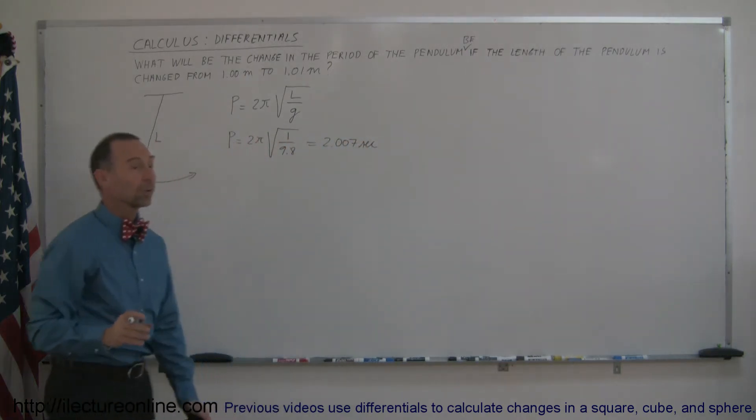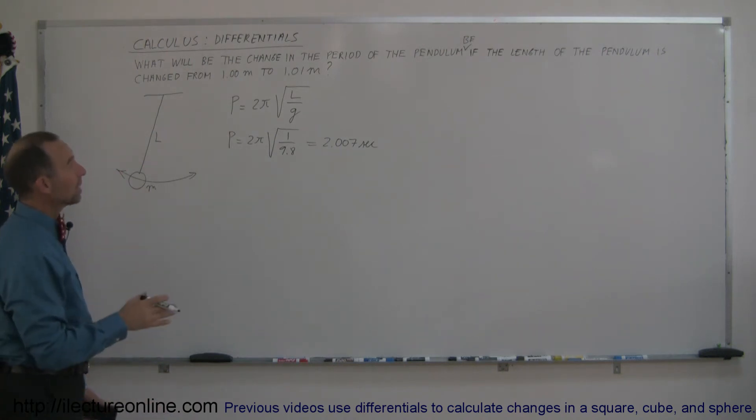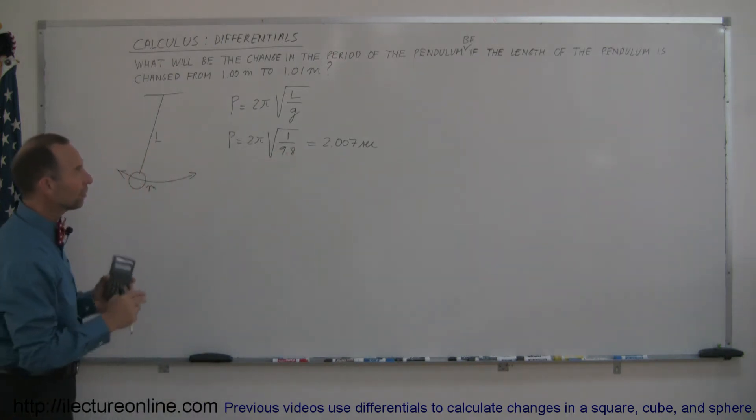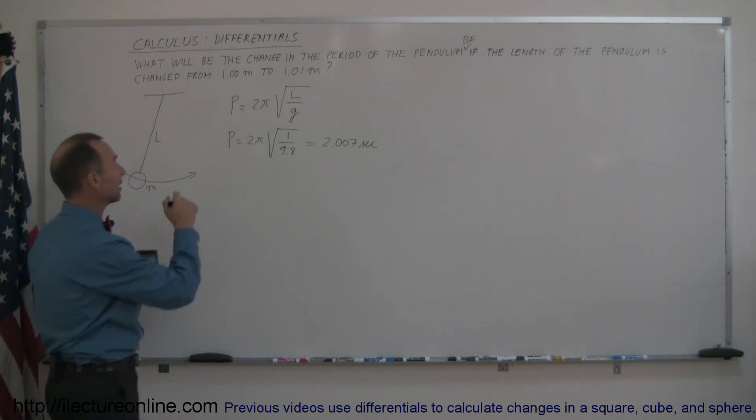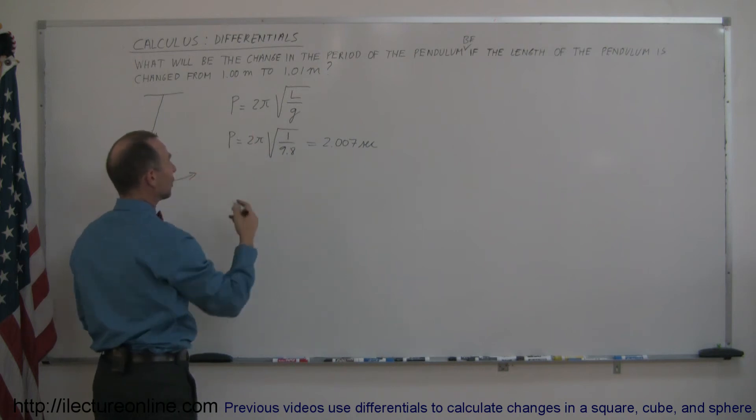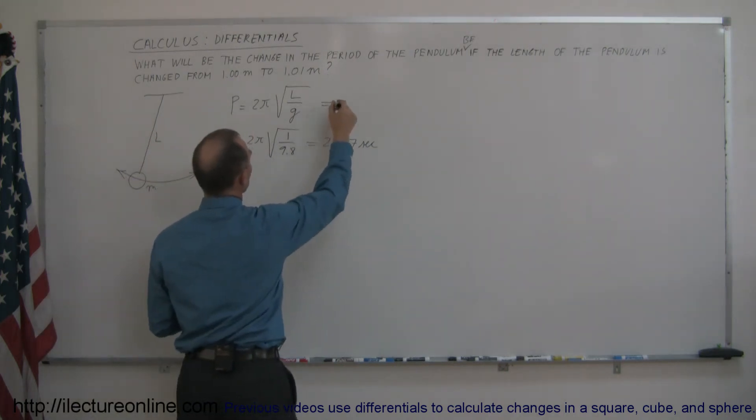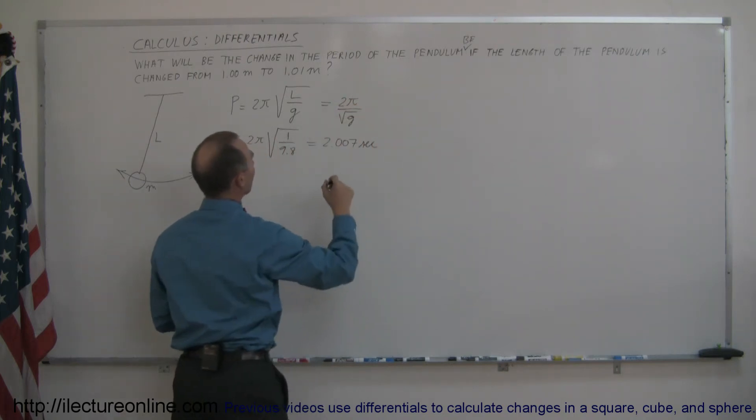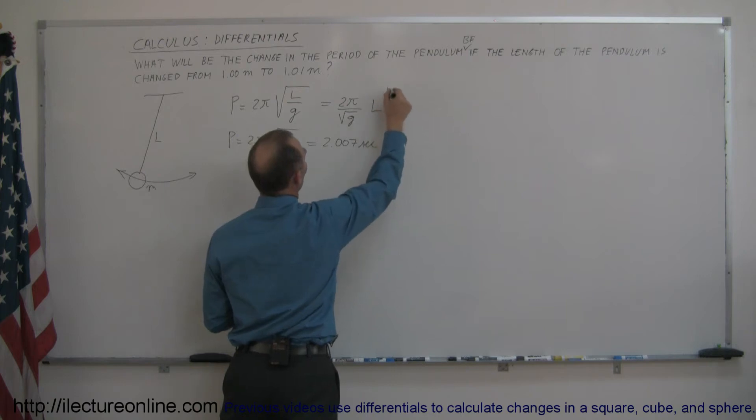So how much will our pendulum period change if we make the pendulum length 1 centimeter longer, from 1 meter to 1.01 meter? So we could of course plug in 1.01 and get the value, but I wanted to show you how differentials really help us solve any kind of problem like this. So let's do that. Let's take the derivative of p with respect to l. And in order to do that better, let's rewrite the equation as 2π divided by the square root of g, because g is a constant, times l to the one-half power.